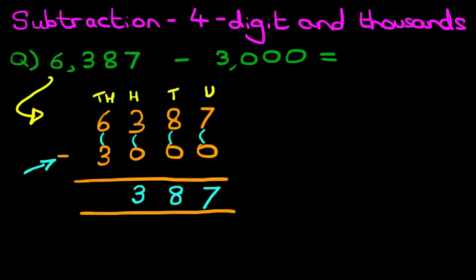And the thousands column, 6 minus 3. That's right, the answer is 3.